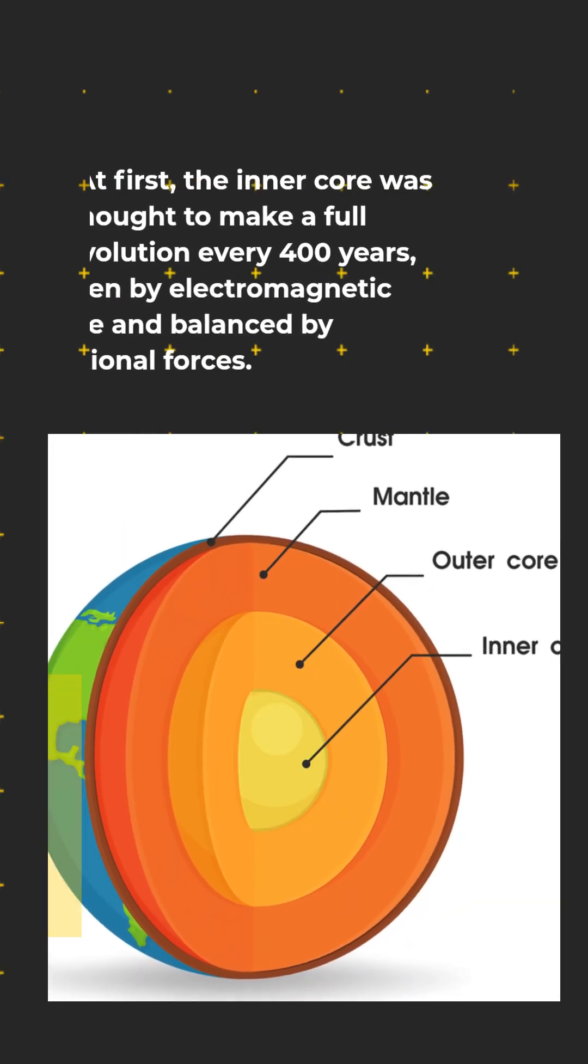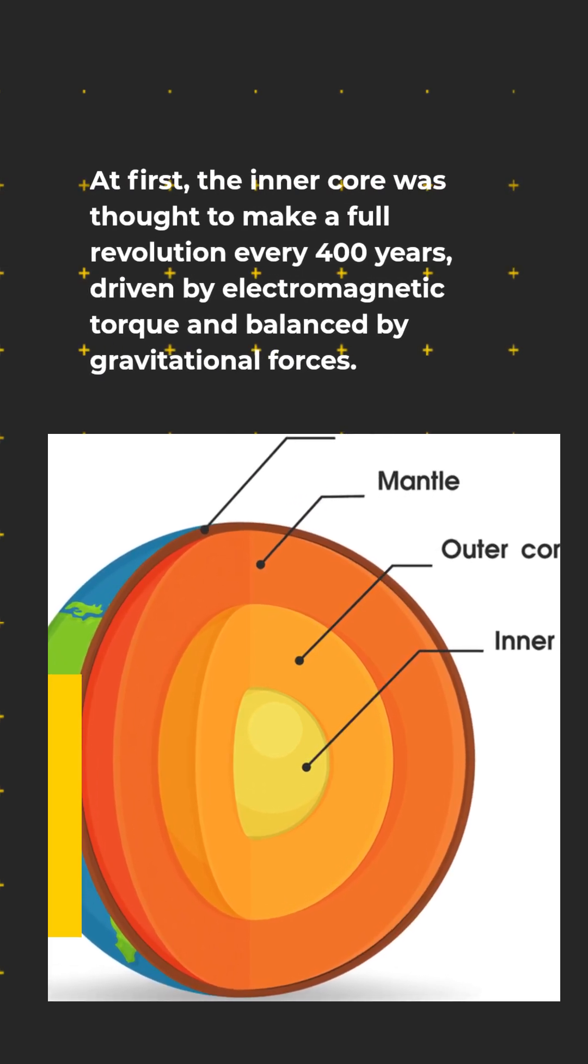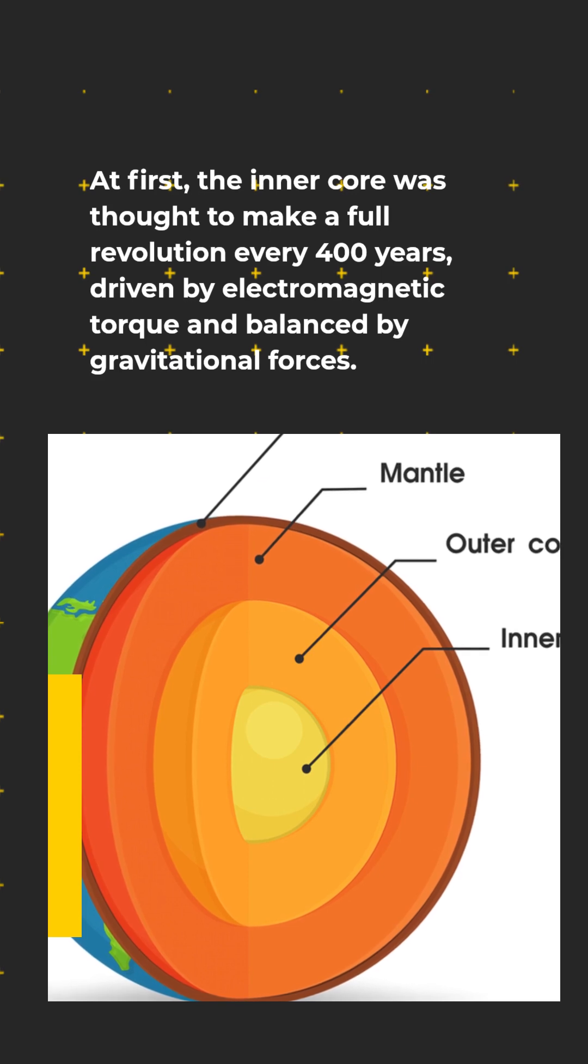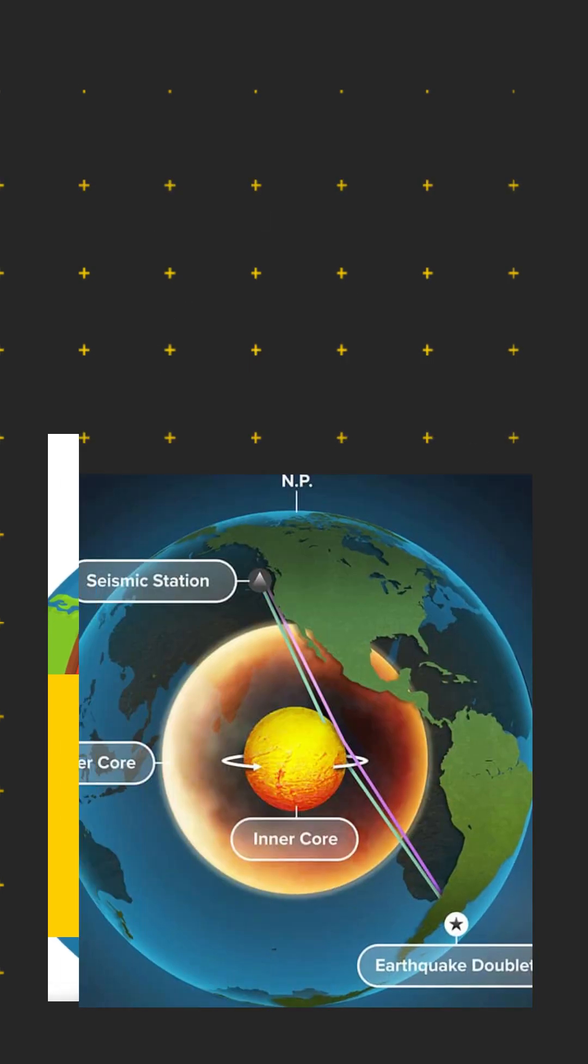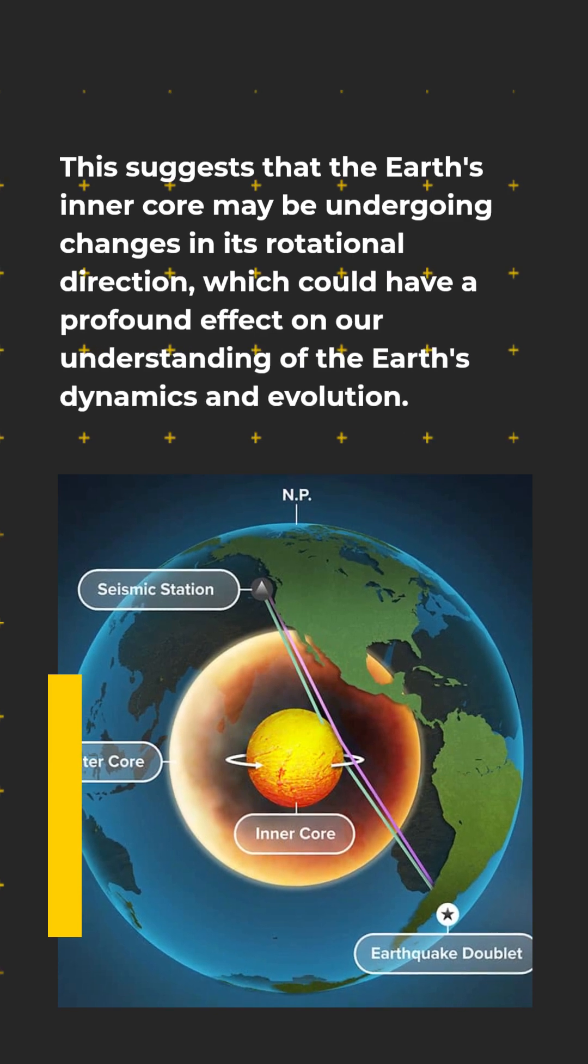At first, the inner core was thought to make a full revolution every 400 years, driven by electromagnetic torque and balanced by gravitational forces. This suggests that the Earth's inner core may be undergoing changes